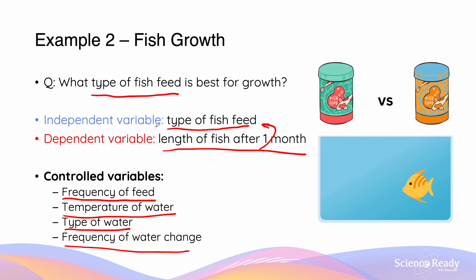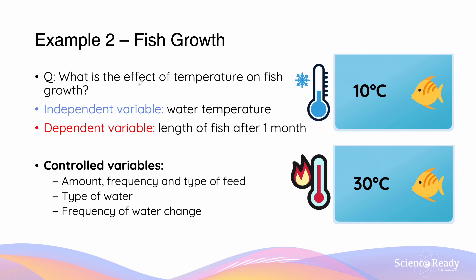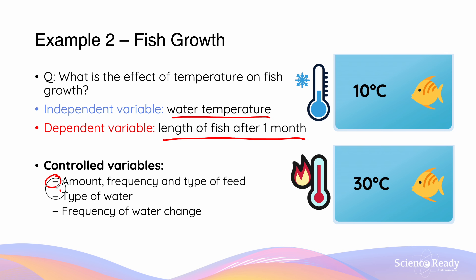If we wanted to choose a different independent variable — say, the temperature of water — our question becomes: what is the effect of temperature on fish growth? Our independent variable is the water temperature, whereas the dependent variable is the length of the fish after one month. Our controlled variables will be the amount, frequency, and type of feed (which was previously our independent variable), as well as the type of water and the frequency of the water change.